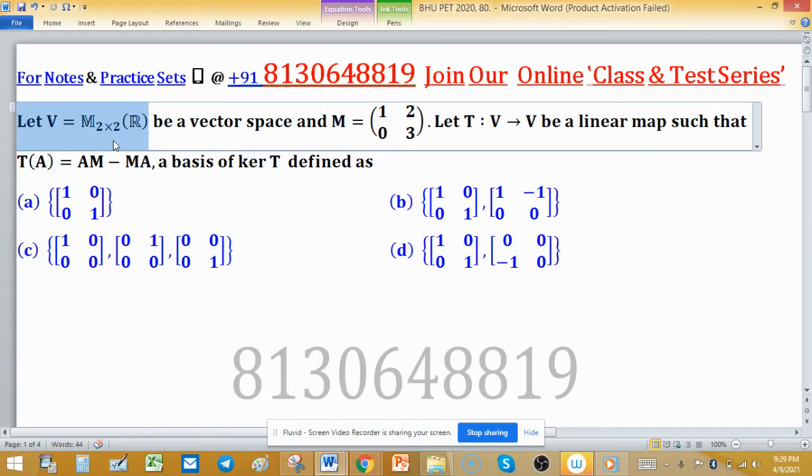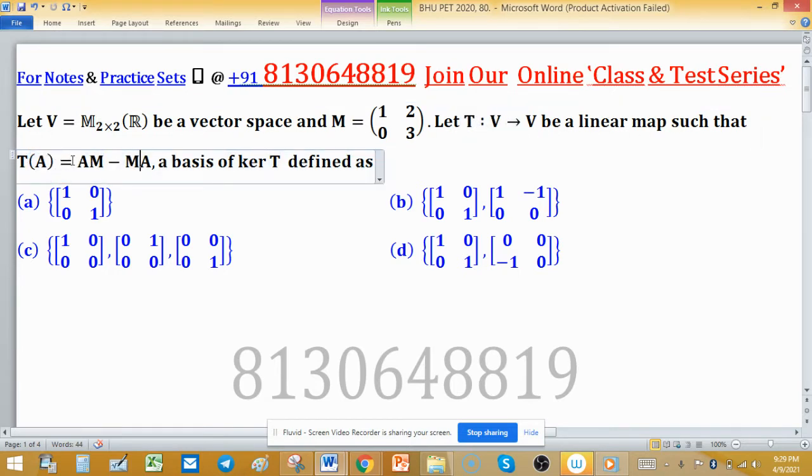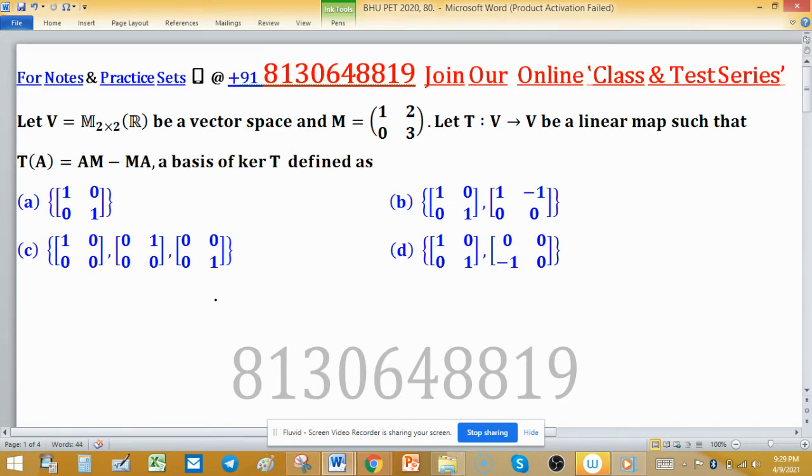Let V equal M 2 by 2 matrices over R be a vector space, and matrix M is given by this structure. Let T be a linear transformation from vector space V to the same vector space V such that T of A, the image of A under T, is A minus MA. A basis for kernel T is defined as, we have to tell about the basis. Options are given to us and we have to choose the perfect option for this problem.